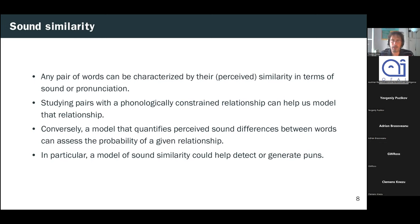Now, it's known that any given pair of words can be characterized by their similarity or their perceived similarity in terms of sound or pronunciation. Studying word pairs that are known to be related by some phonologically constrained process, such as punning or rhyming or erroneous production or morphological derivation or etymological derivation. These can all help us model the phonological rules at play in these processes or in language generally. And conversely, a model that quantifies perceived sound differences between words can help us judge the likelihood or acceptability of a given relationship between them. In particular, a model of sound similarity, which is tuned to puns, could be used to help detect or generate them computationally.